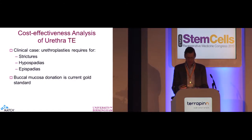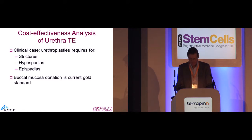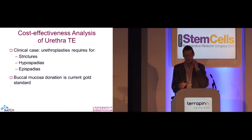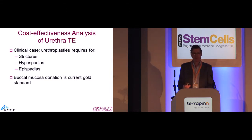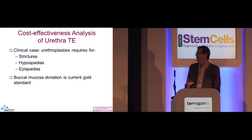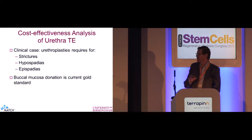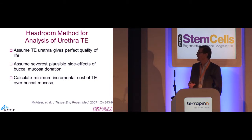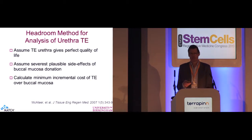It's the example I always use because it's so nice and easy and explains it so nicely. This deals with a kind of cellular therapy for urethral stricture — a long urethral stricture. The current gold standard treatment for this is to take a flap of skin from the inside of the cheek, from the buccal mucosa, and use that as a graft to make good the area covered by the stricture. We wanted to work out whether a tissue-engineered solution would be better, for a client in a company in France. We assumed that the tissue-engineered urethra gives perfect quality of life, but we took into account the side effect of having a painful incision in the mouth. Then we calculated the headroom for this treatment to be effective.